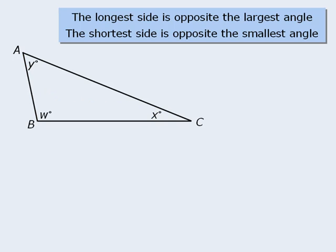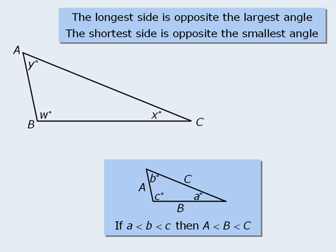Now this property can be summarized as follows. It says that if angle b is greater than angle a, and angle c is greater than angle b, then side b must be greater than side a, and side c must be greater than side b.